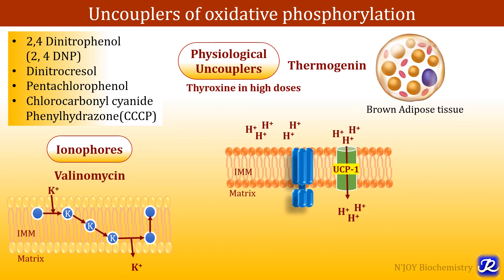This is useful because it is needed to warm the newborn baby and maintain its body temperature. UCP1 is the example of thermogenin, which allows protons to pass through the inner mitochondrial membrane into the matrix, thus abolishing the proton gradient. So these are the various examples of uncouplers of oxidative phosphorylation.